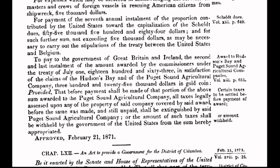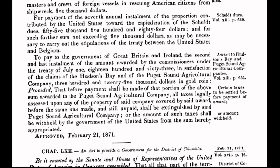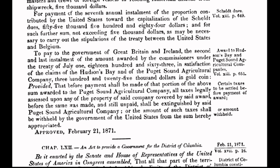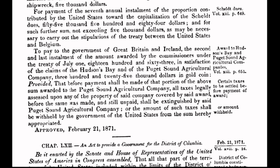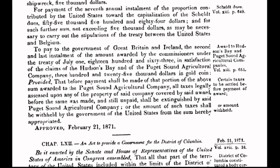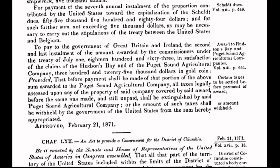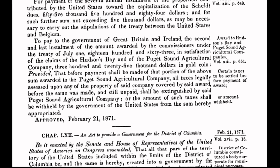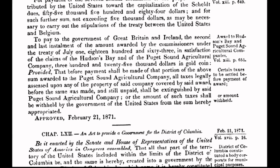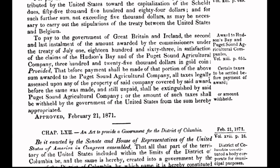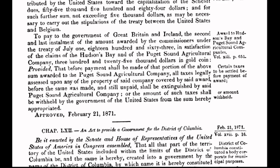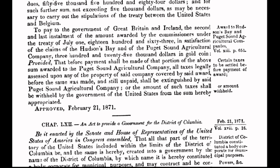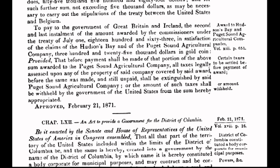With no constitutional authority to do so, Congress creates a separate form of government for the District of Columbia, a 10-mile-square parcel of land. The act was passed when the country was weakened and financially depleted in the aftermath of the Civil War.